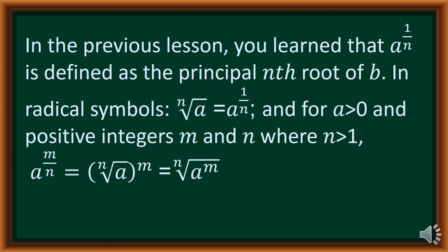In the previous lesson, you have learned that a raised to 1 over n is defined as the principal n-th root of a. In radical symbols, that is the n-th root of a is equal to a raised to 1 over n. And for a greater than 0 and positive integers m and n where n is greater than 1, we have a raised to m over n, which is the same as the n-th root of a raised to m.